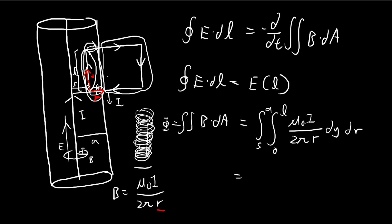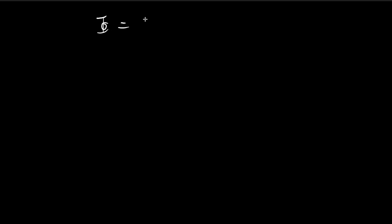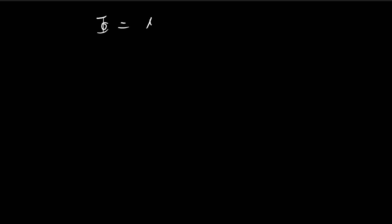So immediately, you can see that for dy, there are no y terms inside, so I can just multiply this inside. And then for the dr, I get natural log R from S to A. So let's just carry this result to this other page. So I get mu L I divided by 2 pi natural log A over S.